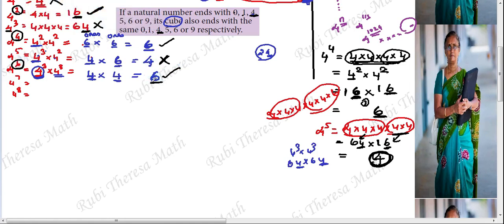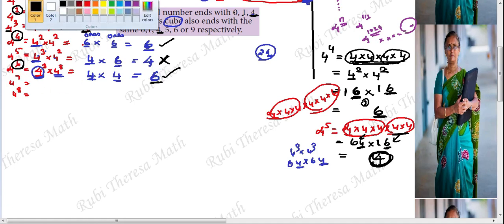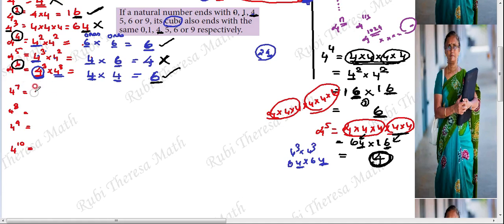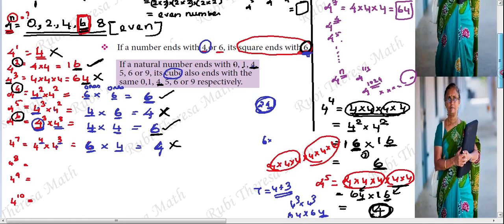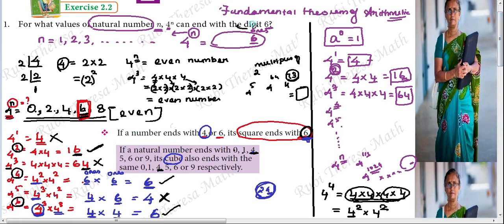When N equals 6, ones place is 6 — so this is included. For 4 power 7, split as 4 power 4 into 4 power 3. 4 power 4 ends with 6, 4 power 3 ends with 4. 6 times 4 is 24, ones place is 4. So 4 power 7 ends with 4, not included. 4 power 8: split as 4 power 4 into 4 power 4. 6 times 6 is 36, ones place is 6 — ends with 6.